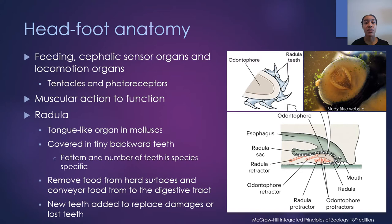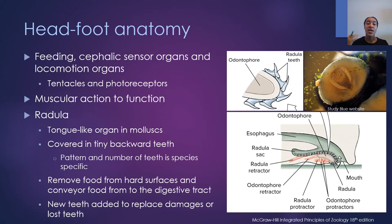A common feeding structure shared among most mollusks is the radula. A radula is not required to be considered a mollusk — some bivalves that feed via filter feeding have lost their radula — but the vast majority do have one. A radula is basically a tongue-like structure with small backward-facing teeth that allow the organism to obtain food and move it through the mouth into the esophagus. You can see this kind of jagged, saw-like mouth part in a mollusk feeding on algae off glass.